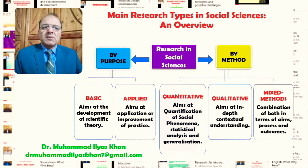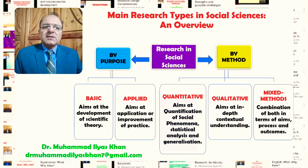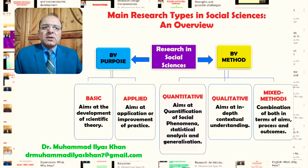The three categories are: quantitative research, qualitative research, and mixed method research. Quantitative research is aimed at the quantification of social phenomena, involves statistical analysis, and ultimately aims at the generalization of research findings. On the other hand, the aim of qualitative research is in-depth, contextual understanding of specific social phenomena in specific situations. Quantitative research findings can be generalized, whereas qualitative research focuses on contextual understanding of particular situations.